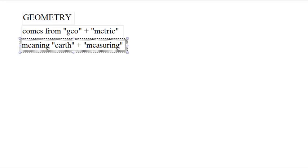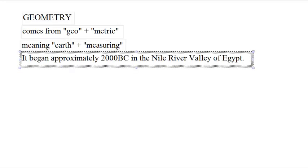The origins of geometry are in surveying. They go all the way back to 2000 BC in the Nile River Valley of ancient Egypt. This is where agriculture began, or it was one of the places that agriculture began.